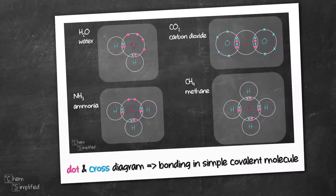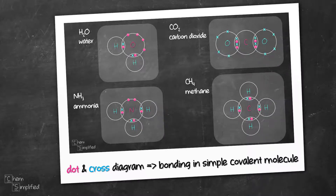In this video, we're going to draw a dot and cross diagram for four simple covalent molecules. They are water, ammonia, methane, and carbon dioxide.